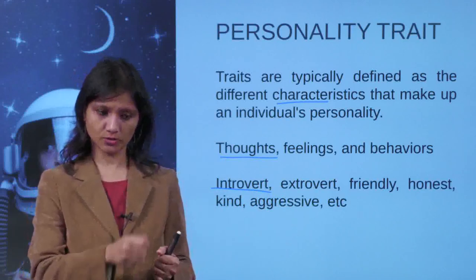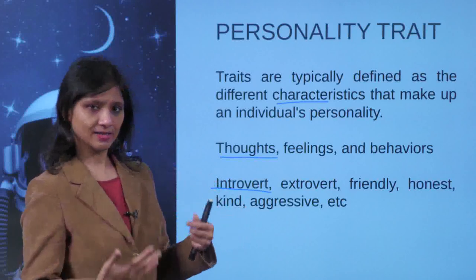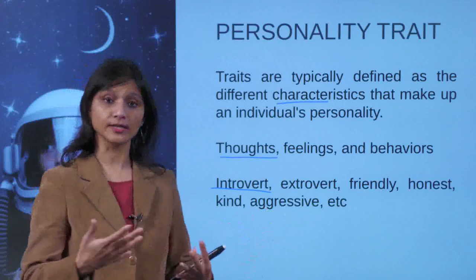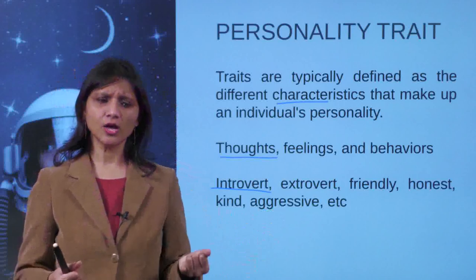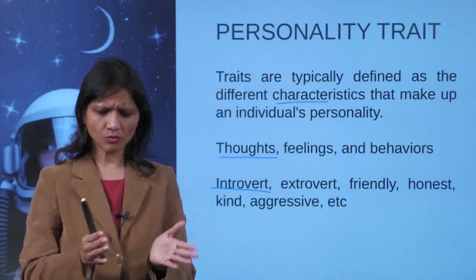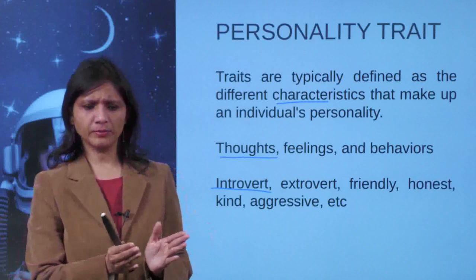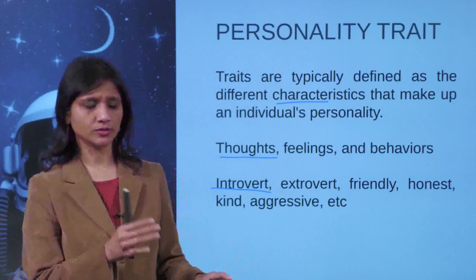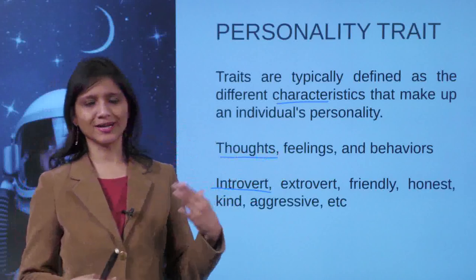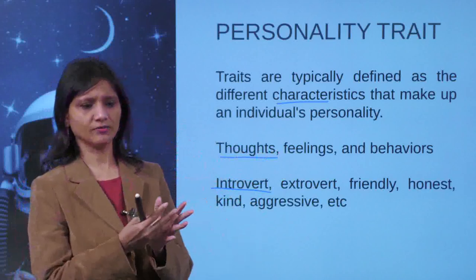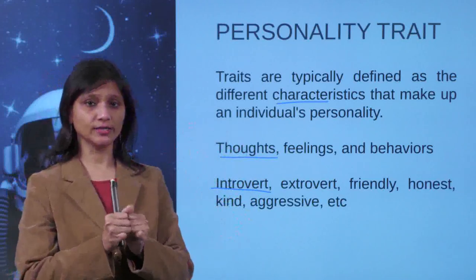You will also hear: 'He is very honest' or 'She is very honest' at school or at work. Kind, honest — these are the traits, characteristics. Or aggressive: some personality traits make people very aggressive, very assertive. But then there are people who are very passive, who do not want to get into any argument. So all these words — introvert, extrovert, kind, honest, the feelings we have, the way we behave, the thoughts in our mind — combined together make up our personality traits.